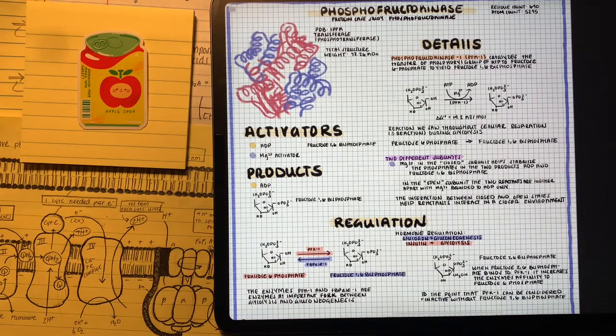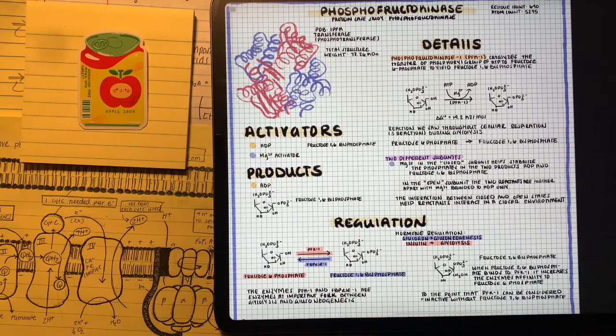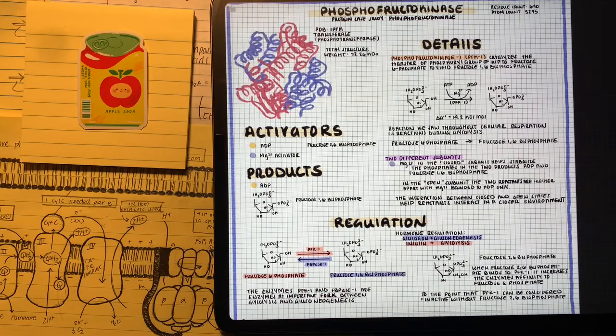This phosphofructokinase is really important at the fork between glycolysis and gluconeogenesis. Let's talk about some of the things that can enhance and activate phosphofructokinase to turn fructose 6-phosphate into fructose 1,6-bisphosphate, encouraging glycolysis.